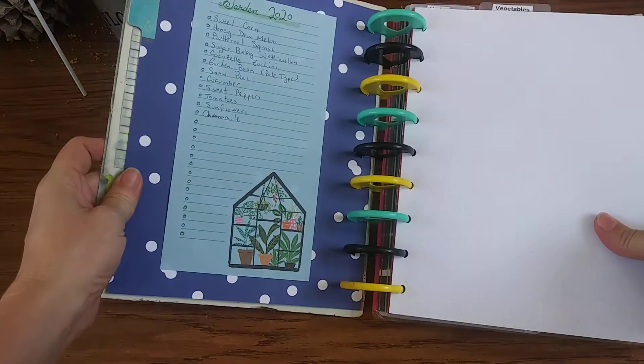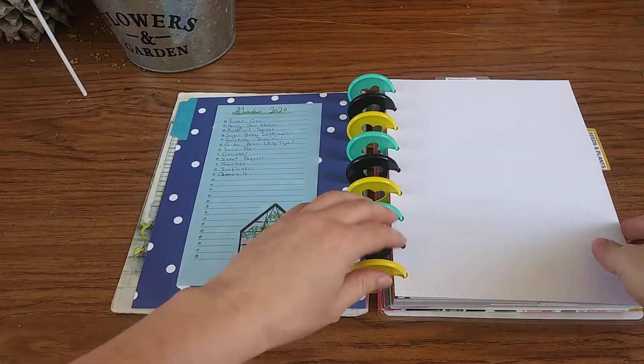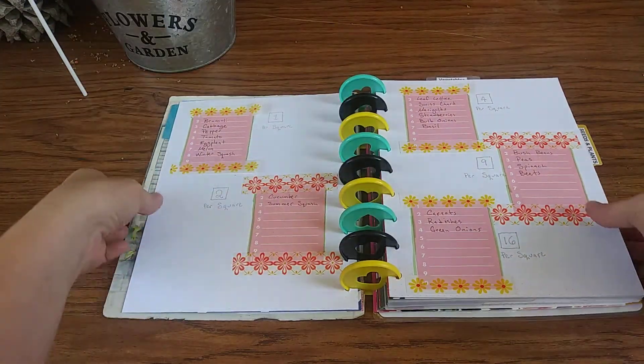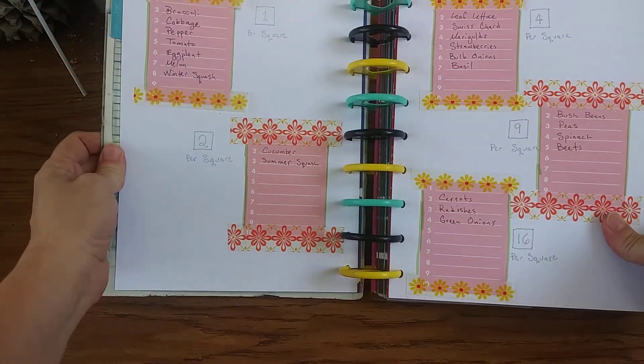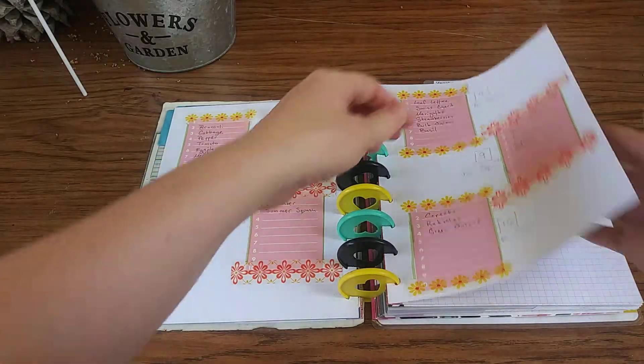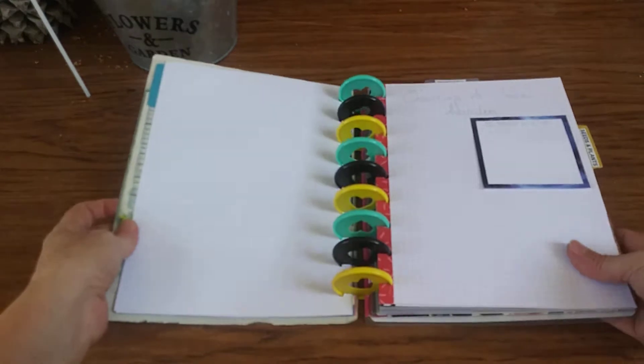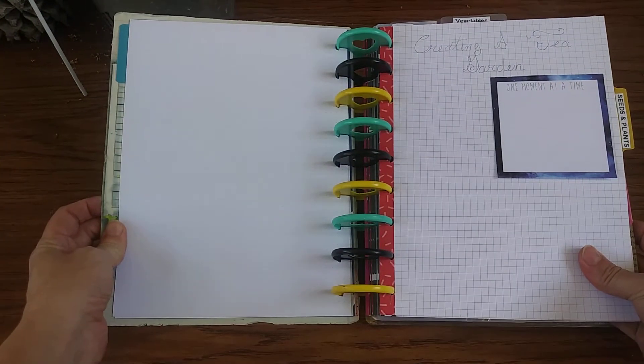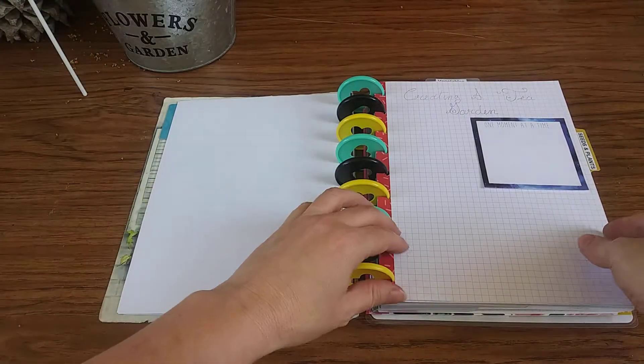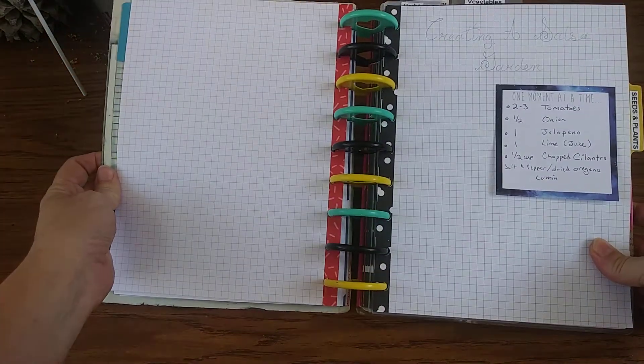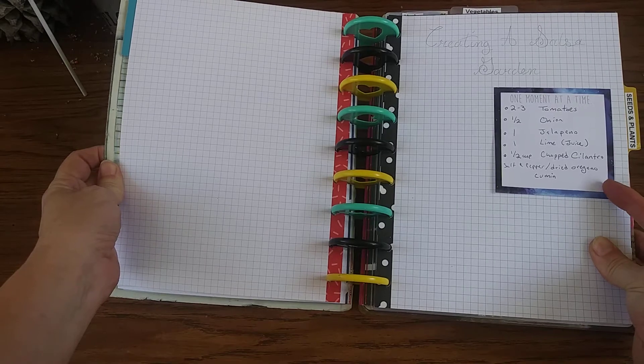We got my 2020 garden, notes on square gardens. So this is a page I started working on today, creating a tea garden. Creating a salsa garden with my salsa recipe.